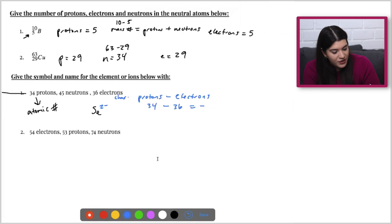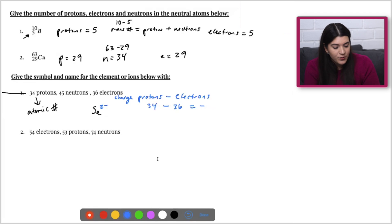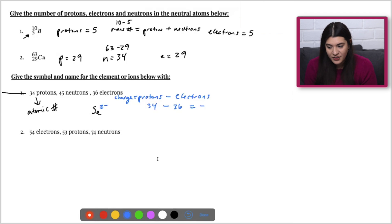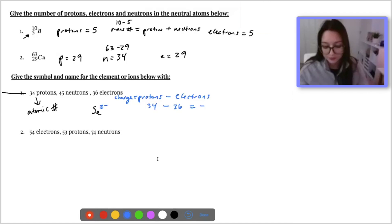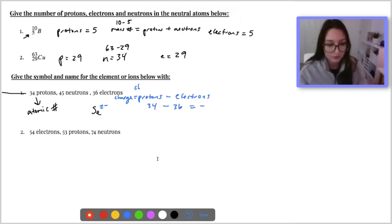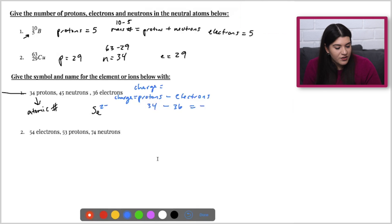The charge is equal to our protons minus our electrons — or equivalently, the charge is equal to the atomic number minus the electrons. Same thing.